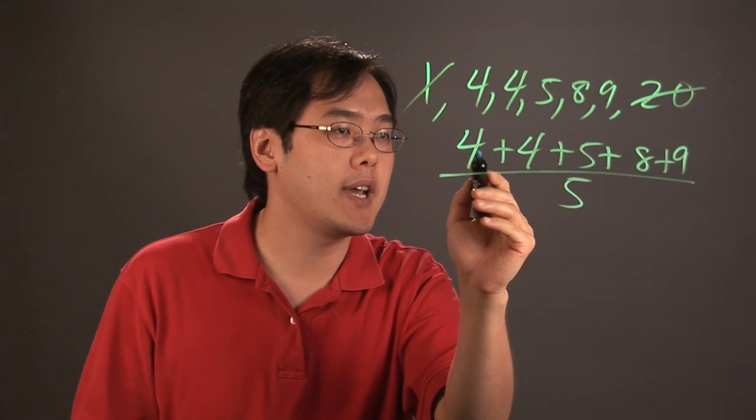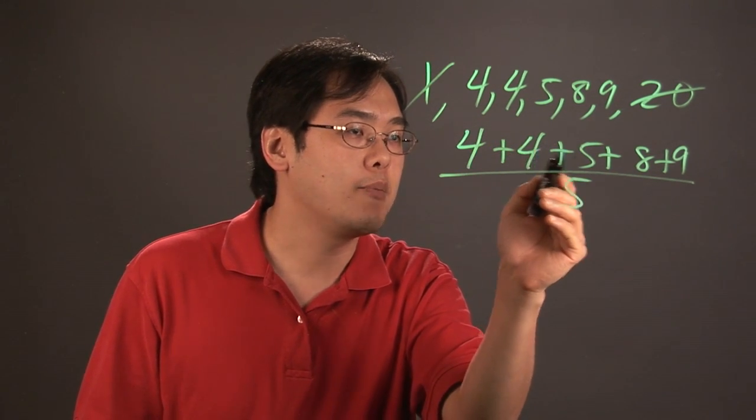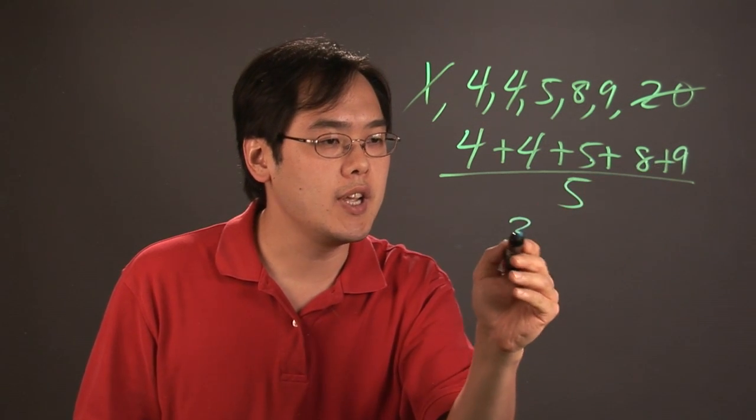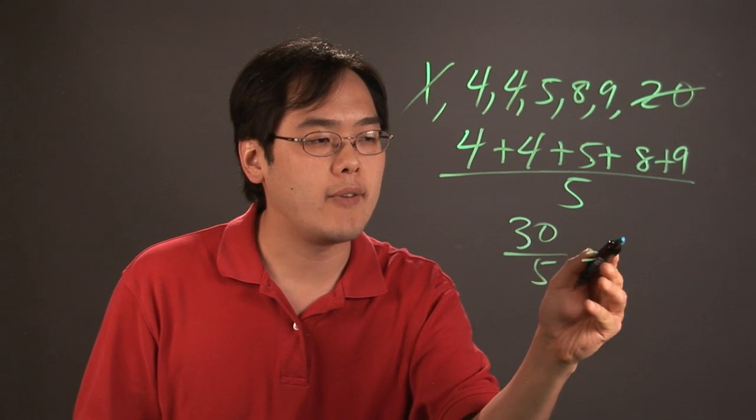So if you just add them up together, you have 4 plus 4 is 8, 8 plus 5 is 13, 13 plus 8 is 21, plus 9 is 30, your average will be 6.